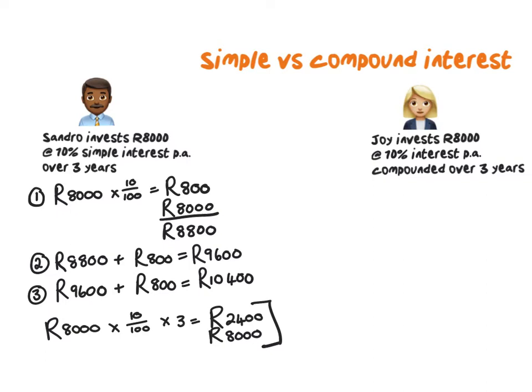Compound interest, on the other hand, means that you get interest on interest. Every year starts with a new amount that you invest, and therefore it grows exponentially. Let's have a look at this.